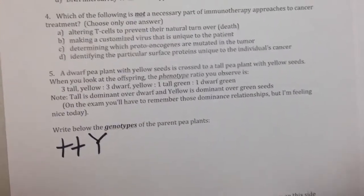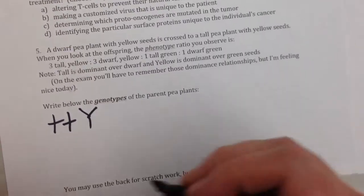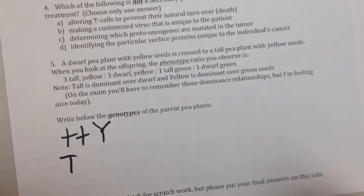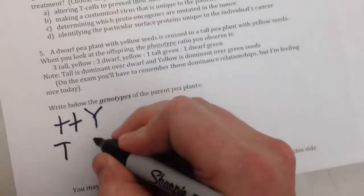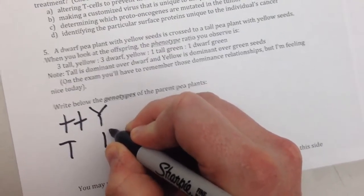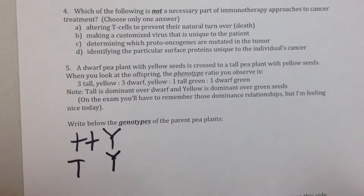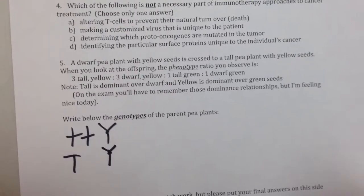The other pea plant is a little bit more difficult, but again, you know that since it's tall, it's got to have at least one copy of the dominant allele, and because it's yellow seeded, it's also got to have at least one copy of the dominant yellow allele.